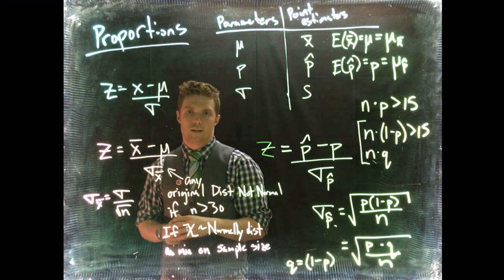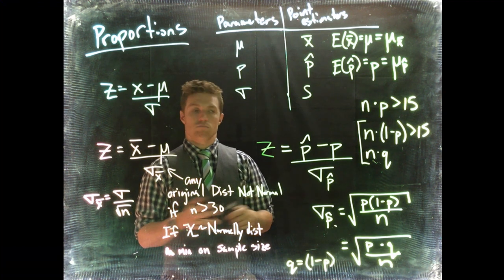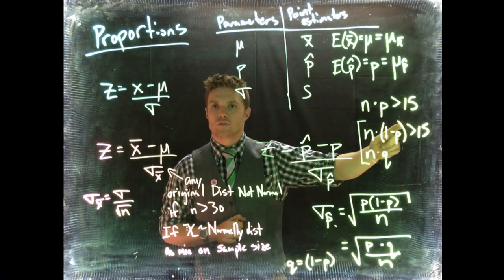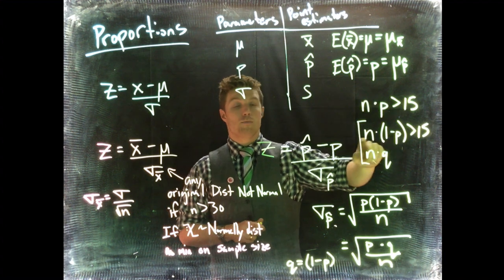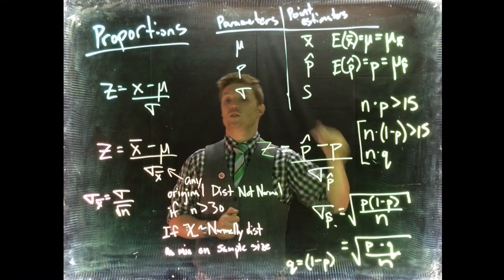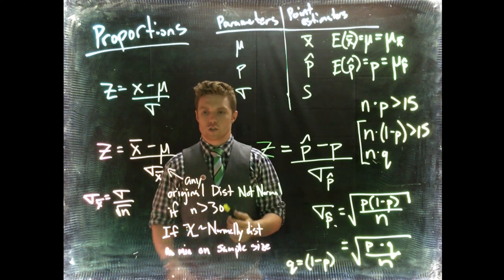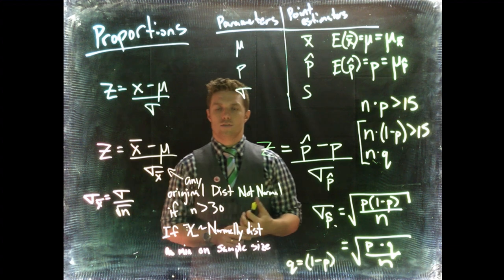What this is saying: let's say we do a survey to know the proportion of people who own a truck. We want the number of people who responded who own a truck to be above 15, and the number who don't have a truck to also be above 15. We want the number with the trait and without the trait to both be greater than 15.